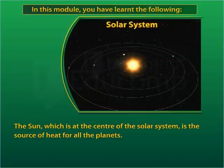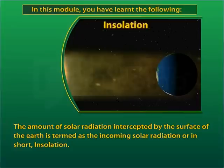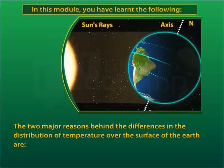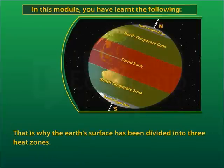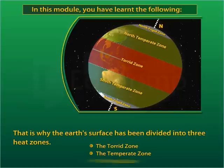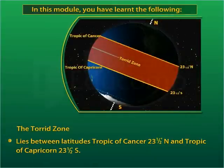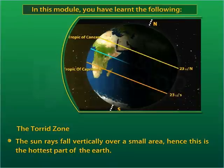The sun, which is at the center of the solar system, is the source of heat for all the planets. The amount of solar radiation intercepted by the surface of the Earth is termed as the incoming solar radiation, or in short, insolation. The two major reasons behind the differences in the distribution of temperature over the surface of the Earth are the angle of the sun's rays and the shape of the Earth. The torrid zone lies between the Tropic of Cancer, 23.5 degrees north, and the Tropic of Capricorn, 23.5 degrees south. The sun's rays fall vertically over a small area; hence, this is the hottest part of the Earth.